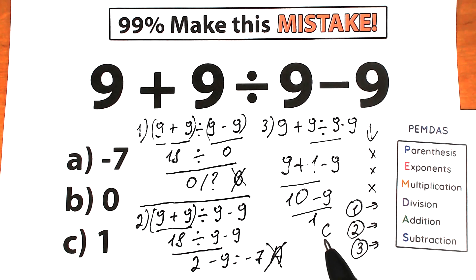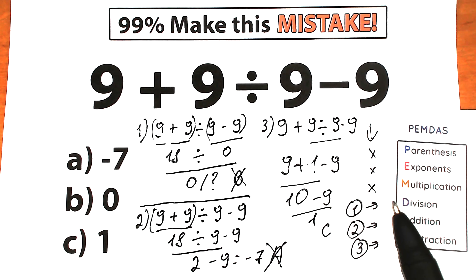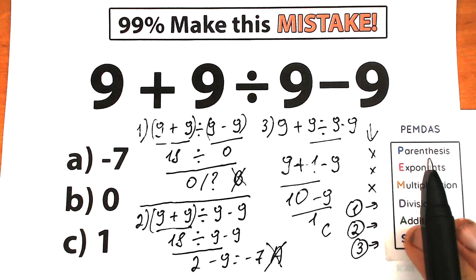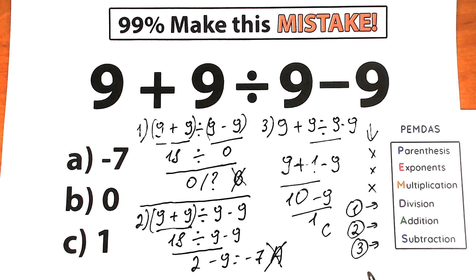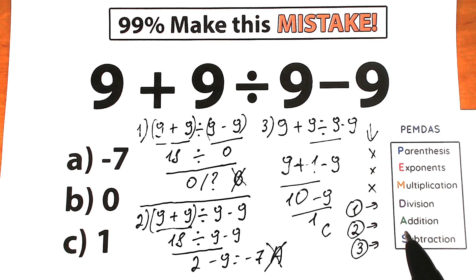Our last interpretation, option C — the answer is 1 — is the correct answer, 100%, because we solved the challenge according to PEMDAS. The first step was division because division has the higher position and highest priority. The next step is addition and the last step is subtraction. This is the correct answer and correct approach.